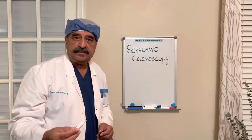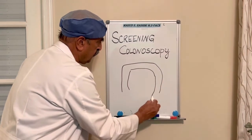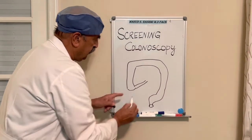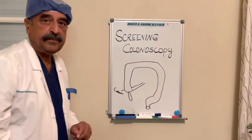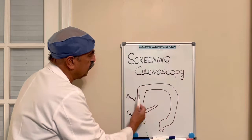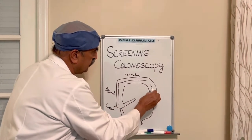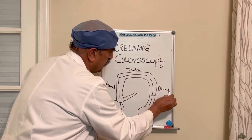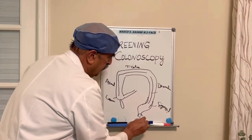The colon is a large intestine and basically it's like an inverted U. This is the small bowel which is coming towards the colon. This is called the cecum. The appendix is here. The large bowel starts from here — this is the ascending colon, because it's going up. From here to here is the transverse colon. Then it comes down here; this is the descending colon. And this is the sigmoid colon. And this is the rectum.